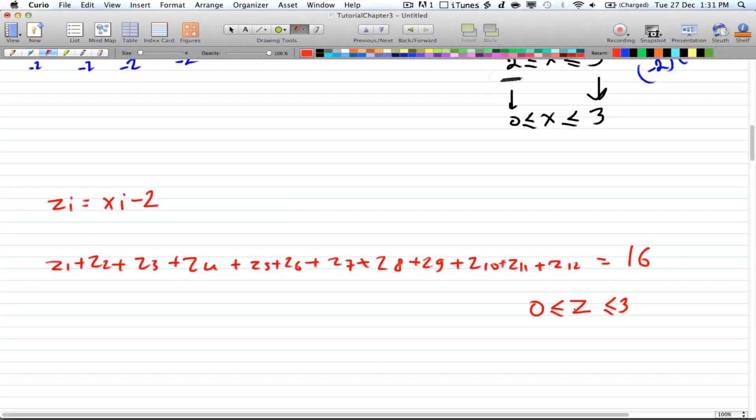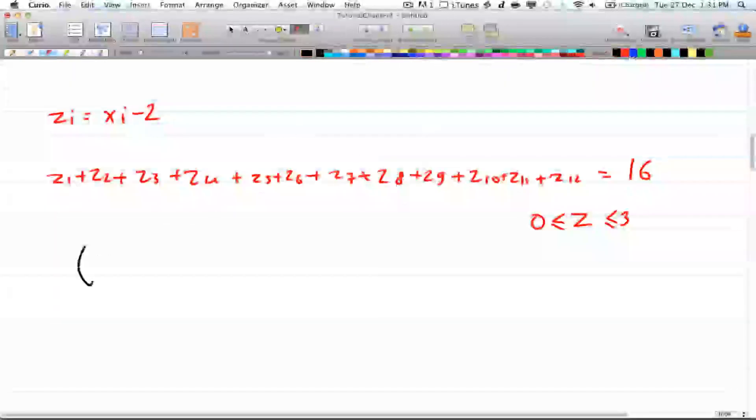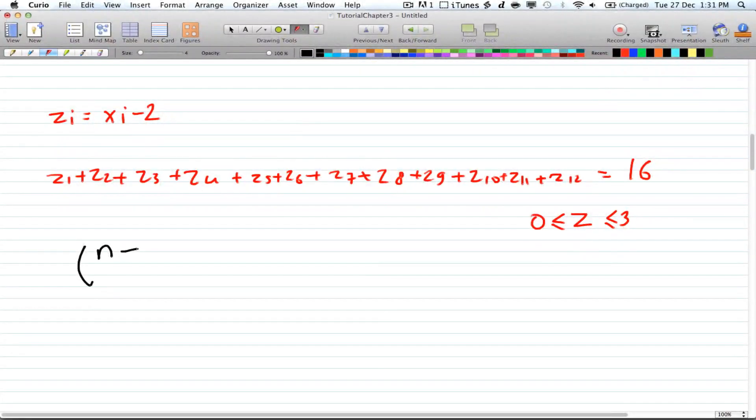This is exactly the same as the combination with repetition. If you don't know what combination with repetition is, you can watch it. Remember that combination with repetition is the number of variables plus the result minus 1, choose the result.